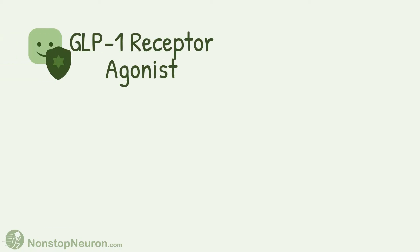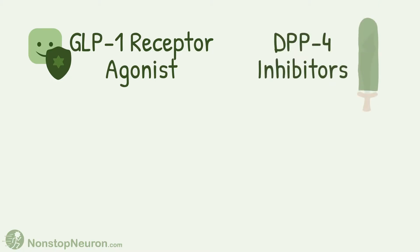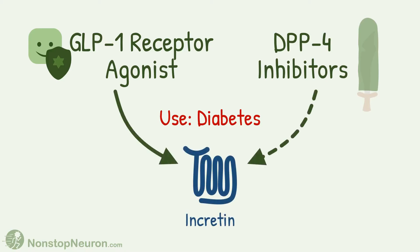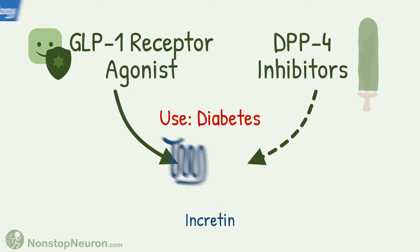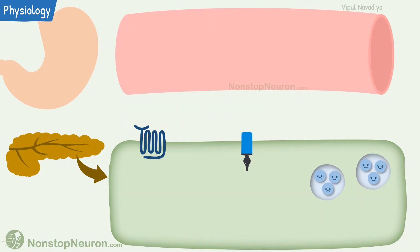Hello. In this video we will see the mechanism of action of GLP-1 receptor agonists and DPP-4 inhibitors. Both groups are used in diabetes. We will be studying them together because, although their direct targets are different, they both ultimately affect the same system — incretins. So let's see the physiology of incretins first.